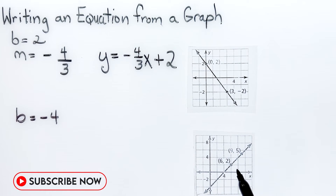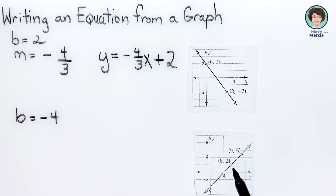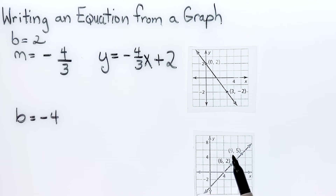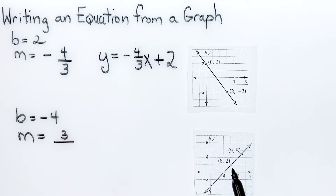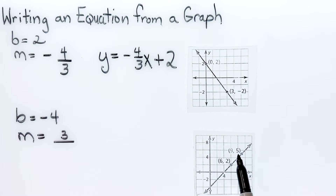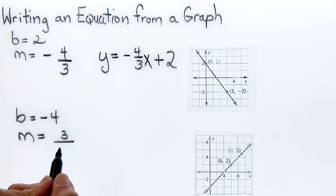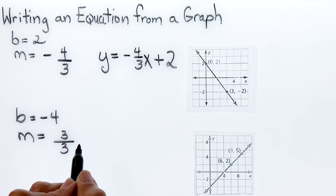Going from the two labeled points, remember every time I count one space it represents two. So going up one space is two units, and a half space would be three. The rise is three and going over — one more is three — then over three. So it's a three over three slope, which is the same as 1.